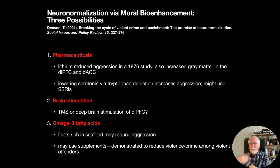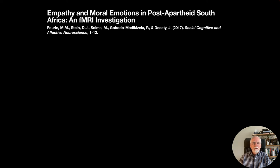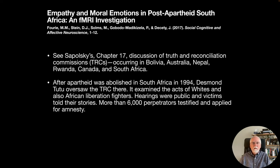This combination of pharmaceuticals, brain stimulation, and omega-3 supplementation could normalize the brain and reduce violence — a better approach than simply cycling through incarceration and release. The other example involves empathy, morality, reconciliation, and culture. A 2017 paper in Social Cognitive and Affective Neuroscience, with Jean Decety as senior author, examined empathy and moral emotions in post-apartheid South Africa using fMRI.